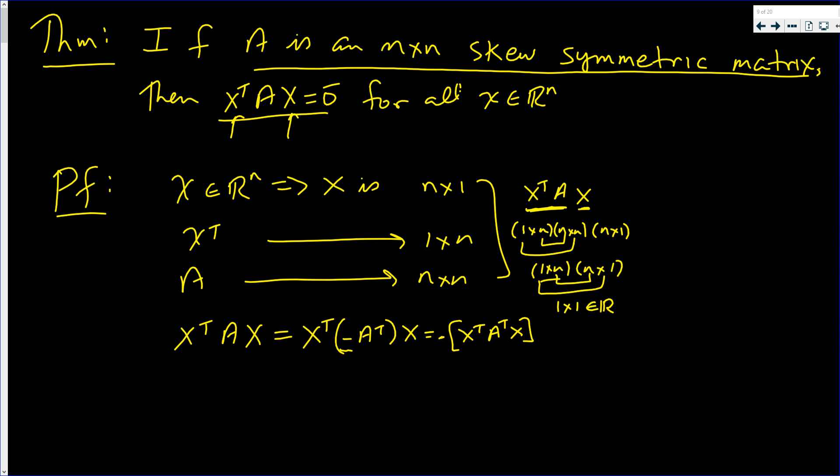So what we have is that x transpose times A times x is negative x transpose times A transpose times x. Now remember this is a real number. And remember that A transpose, well let's use a different letter.